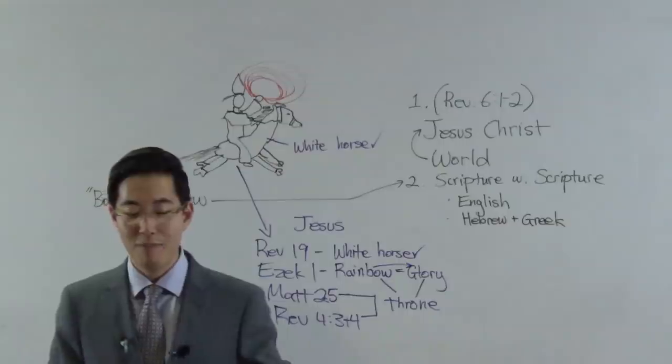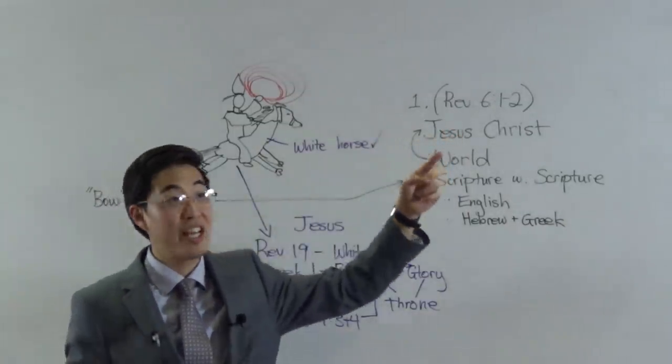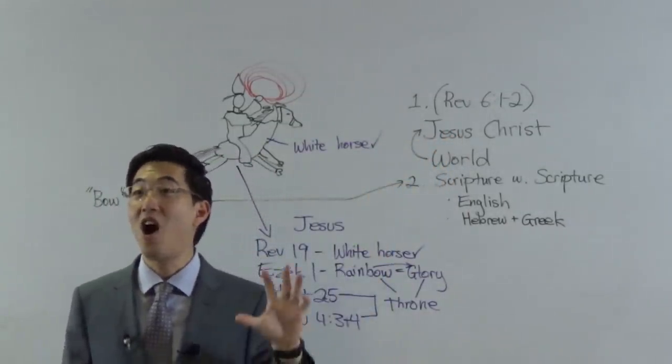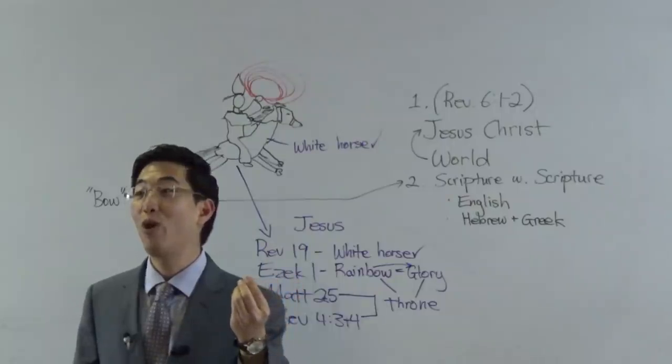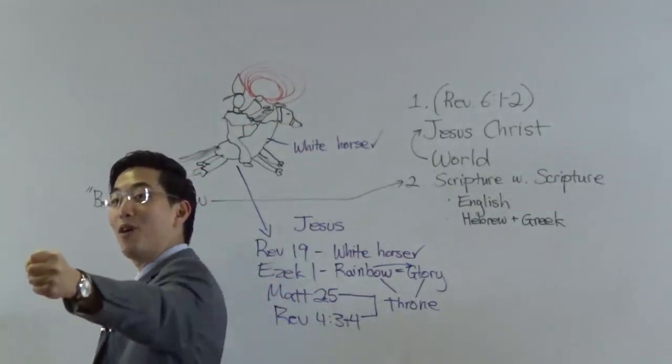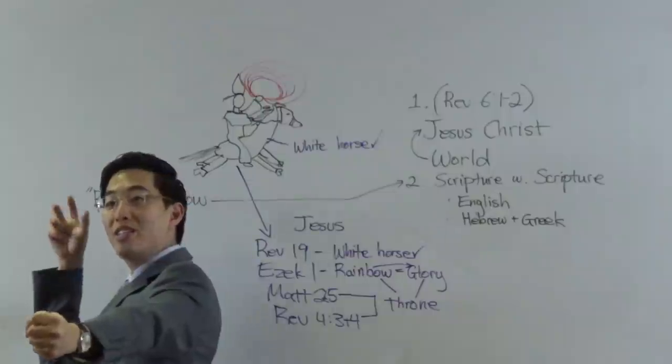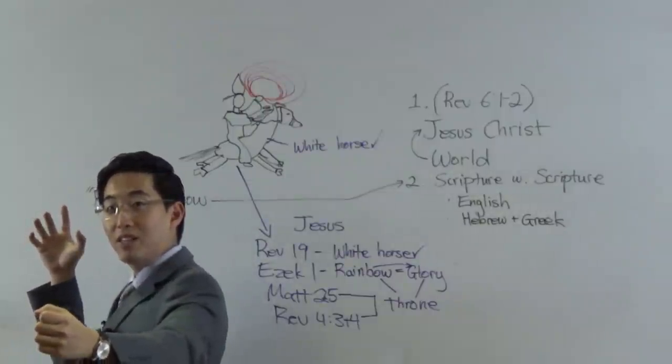By the way, if you look up that Greek word in Revelation 6, it's toxin, I think. That's close to poison. He comes in with a bow and an invisible, poisonous arrow. It's toxic.